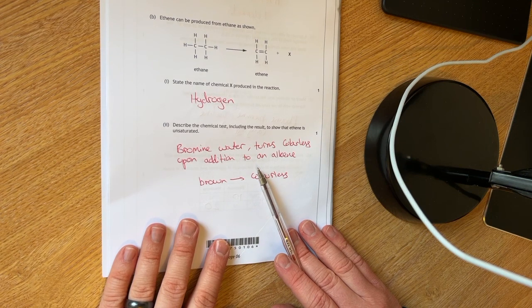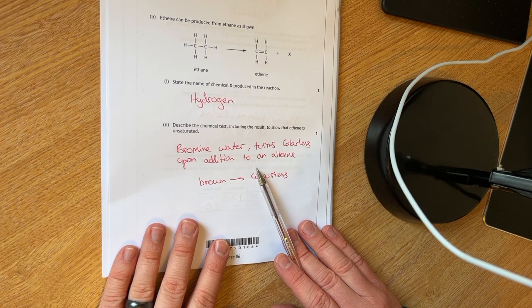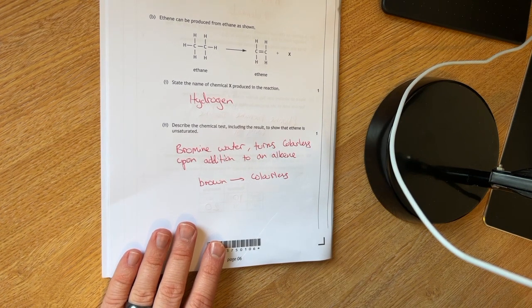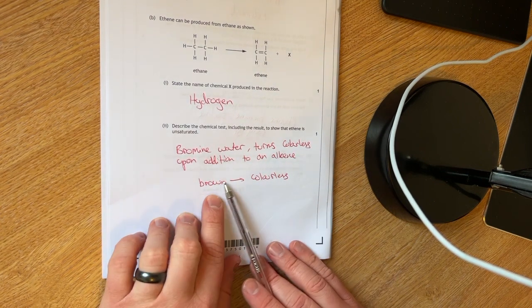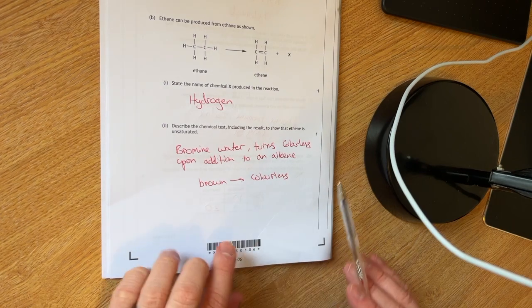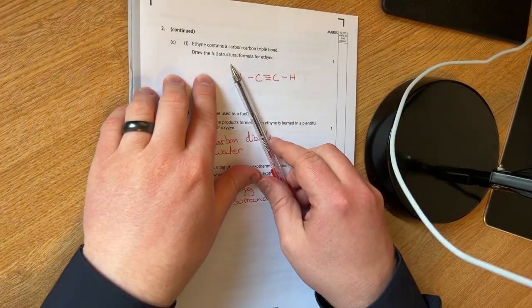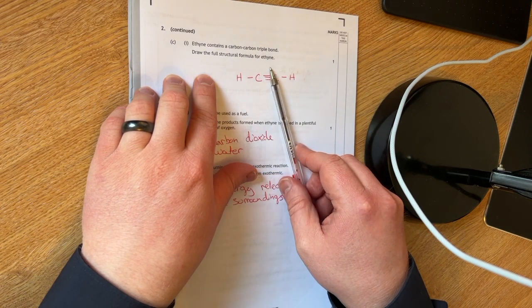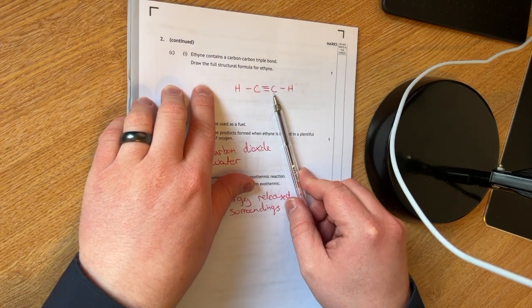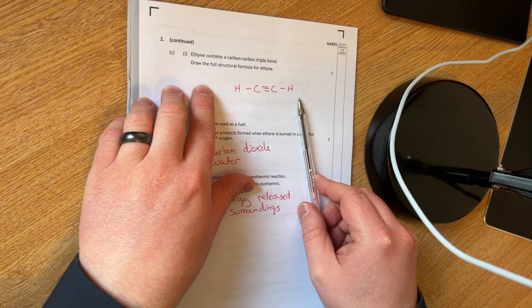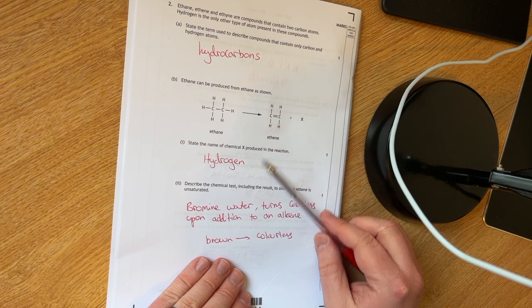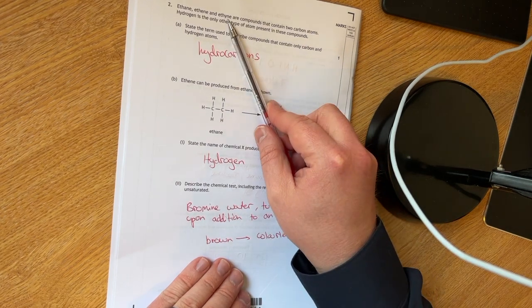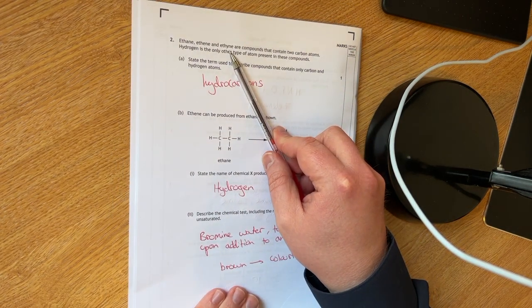You've to describe a chemical test including the result to show that ethene is unsaturated. Add bromine water, turns colorless upon addition to an alkene. So it goes from brown to colorless. You have to draw the full structural formula for ethyne, which has got a triple bond. So my triple bond is between the carbons and two hydrogens on the left and the right.